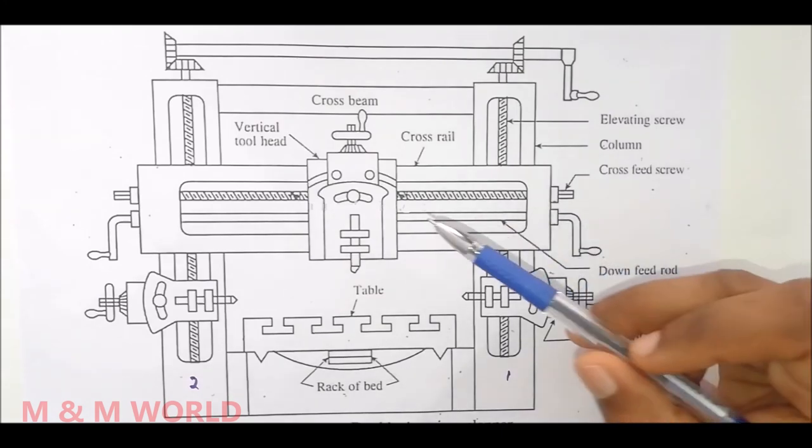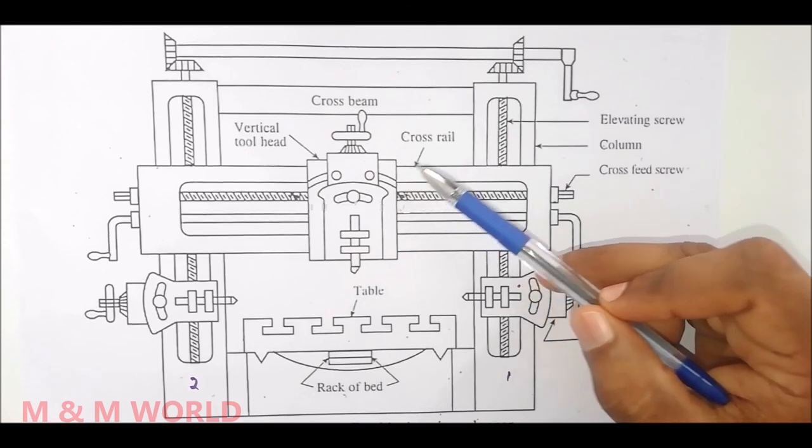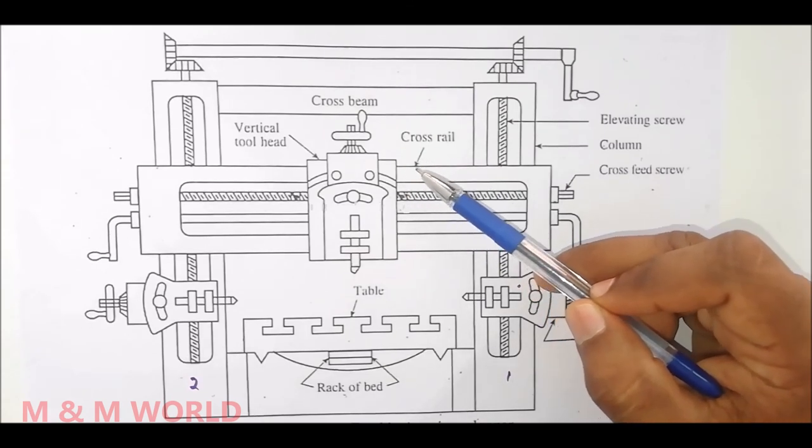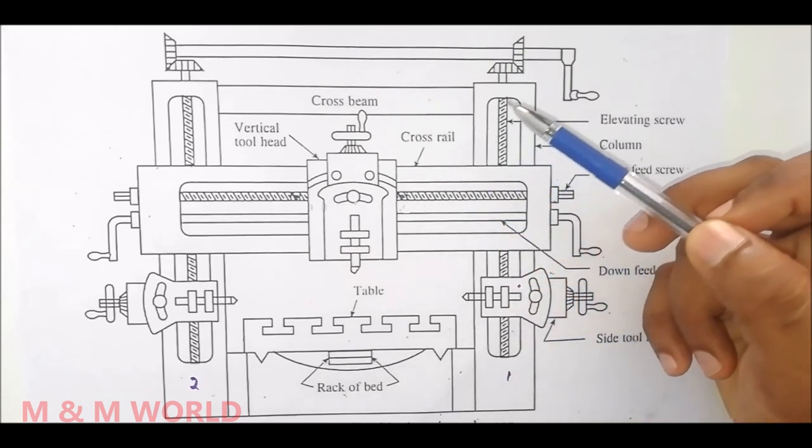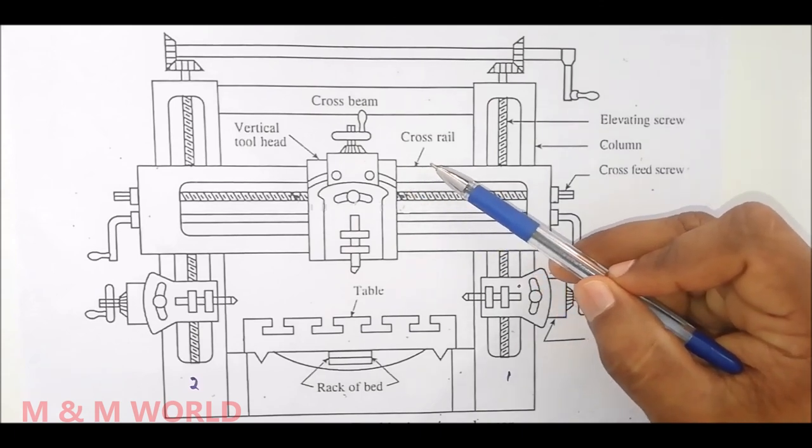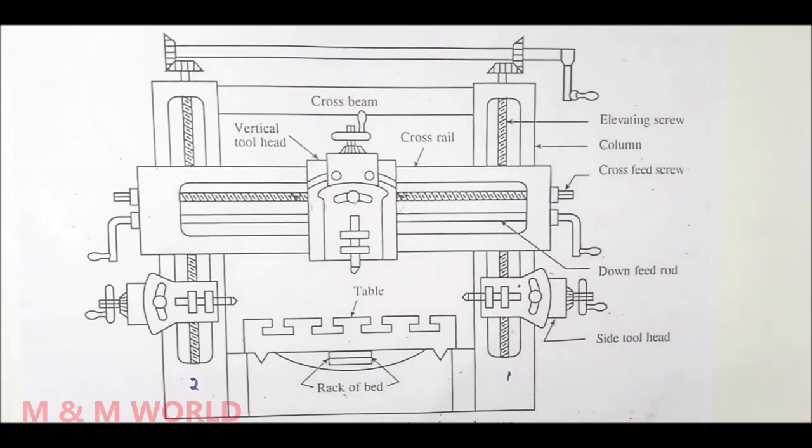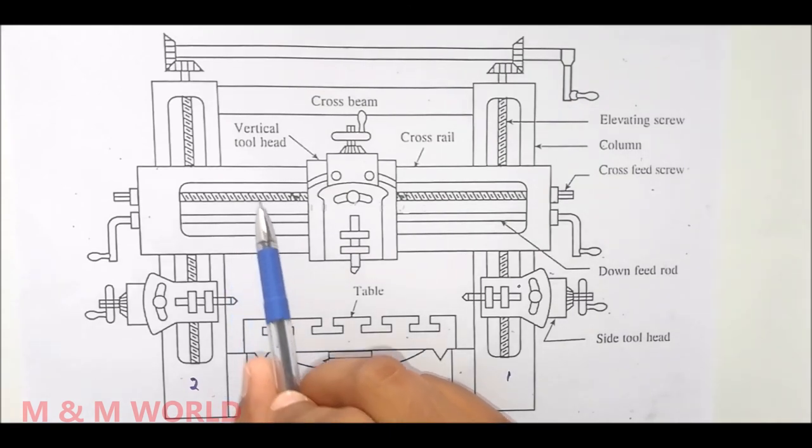The swivel base is pivoted on the saddle and is graduated on each side to 60 degrees. The swivel base may be swiveled to any desired angle, and the down feed screw is rotated to feed the tool at that angle for machining angular surfaces. In a double housing planer machine, usually the cross rail will have two tool heads.